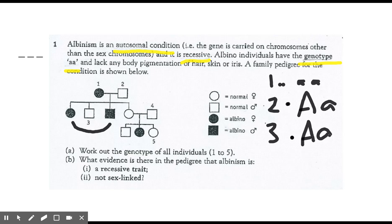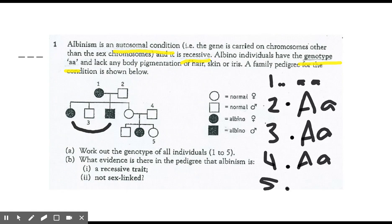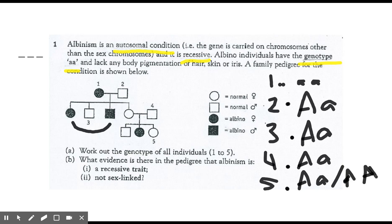Individual four is a normal male who mated with a normal female yet produced a child with albinism. This means both parents must carry the recessive allele 'a', so individual four is 'Aa'. Individual five is more difficult — without information from the next generation we cannot determine the exact genotype. At this point we can say individual five is either 'aa' or 'Aa', since they could receive either allele combination from their parents.